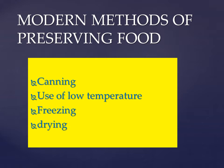Pupils, we move to the second method of preserving food, that is the use of low temperature. Food stored at low temperatures remains fresh for a long time. Machines called refrigerators are used to keep food at very low temperatures of between 0 degrees Celsius to 8 degrees Celsius.